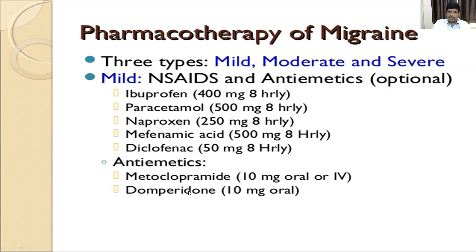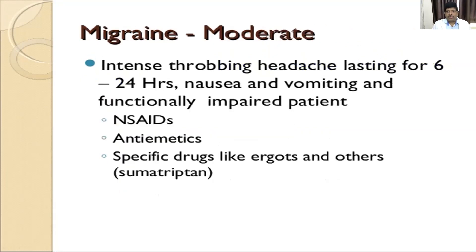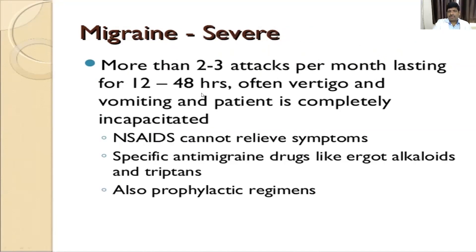In moderate cases, if there is throbbing headache for 6 to 24 hours with nausea and vomiting, analgesics should be given along with antiemetics, or a specific drug like ergotamine or sumatriptan can be given. In severe form — when it goes for 1 to 2 days with 2 to 3 attacks per month along with vomiting and total incapacitation — analgesics should be given, a specific migraine drug like ergotamine with caffeine or sumatriptan is given, and a prophylactic regimen should be given to reduce further chances of migraine attacks.